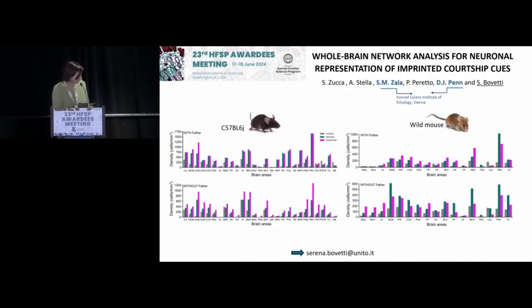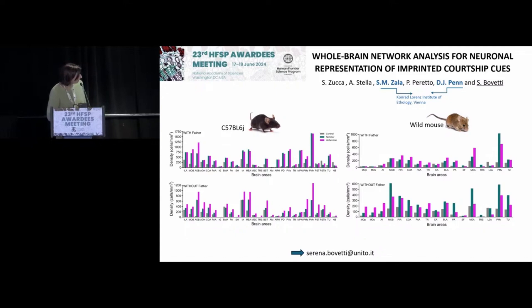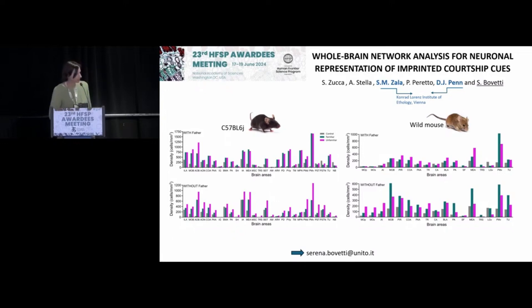I don't have time to go into detail of which brain areas are recruited, but what I would like to underline is that sexual imprinting has evolved for inbreeding avoidance. When we use laboratory mice, such as C57BL/6 mice, they are highly inbred. That's why the project also aims to unravel brain regions not only in lab mice but also in wild mice, which are not very easy to work with. We are doing that in collaboration with Dr. Dustin Penn at the Konrad Lorenz Institute of Ethology in Vienna. And I can anticipate that the brain regions are actually quite different.